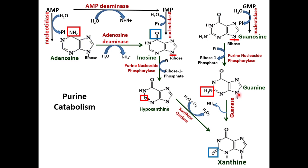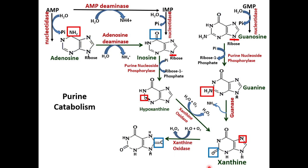Guanine then undergoes deamination with the help of the enzyme guanase. The amino group is removed and it forms xanthine. Xanthine then, further with the enzyme xanthine oxidase, is converted to uric acid.